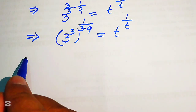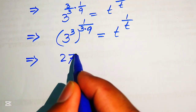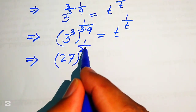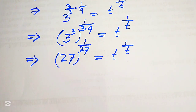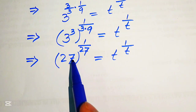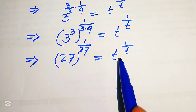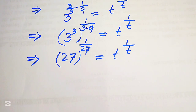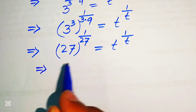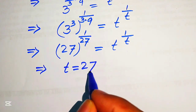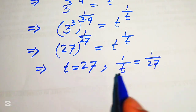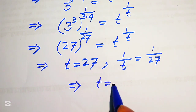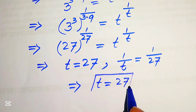Now, 3^3 equals 27, and 3 times 9 also equals 27. So we have 27^(1/27) = t^(1/t). On the left-hand side the exponent is the reciprocal of its base, and similarly on the right-hand side. Comparing bases gives t = 27, and comparing exponents also gives t = 1-over-(1/27) = 27. Both cases give the same value: t = 27.